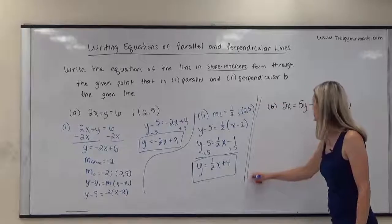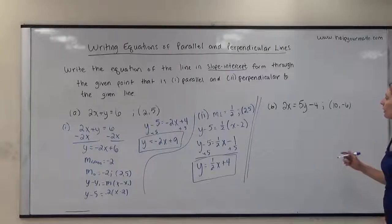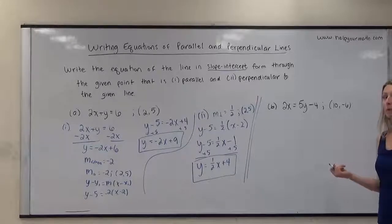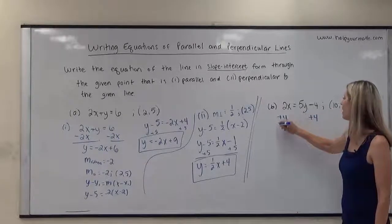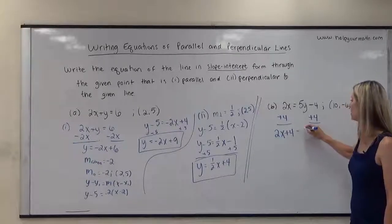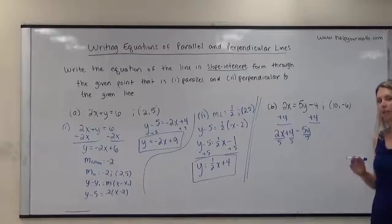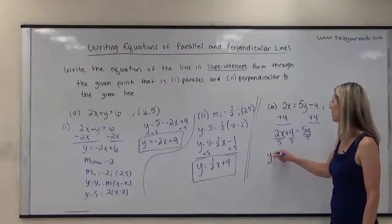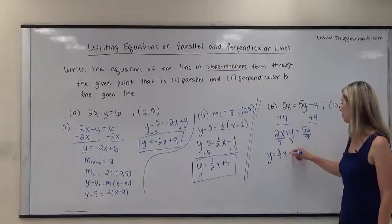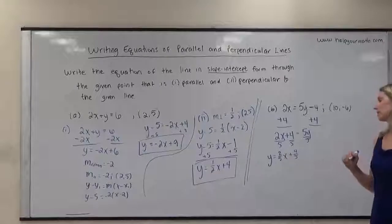In our next example, the given equation is 2x equals 5y minus 4, and the point is (10, negative 6). Before considering parallel or perpendicular, I need to rewrite the given equation in slope-intercept form. Adding 4 to both sides gives 2x plus 4 equals 5y, then dividing everything by 5 and applying the commutative property of equality gives y equals two-fifths x plus four-fifths. Now we have the slope of the given line: two-fifths.